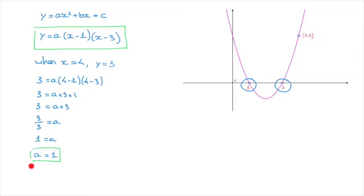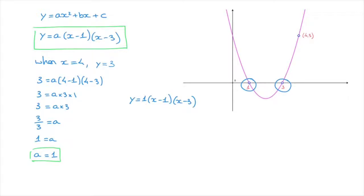Combining this result with the factored equation, we can state that this parabola's equation can be written y equals one times (x minus one) times (x minus three). It's worth pointing out that when the coefficient a is equal to one, we don't bother writing it. So we can state that y equals (x minus one)(x minus three) is the root factored form of this parabola's equation.